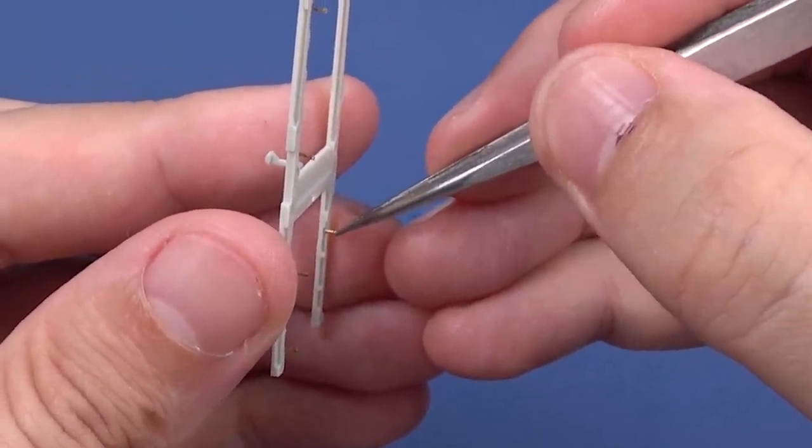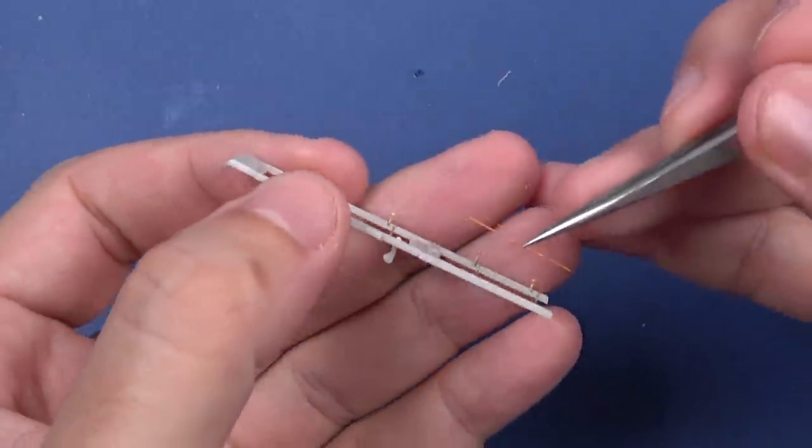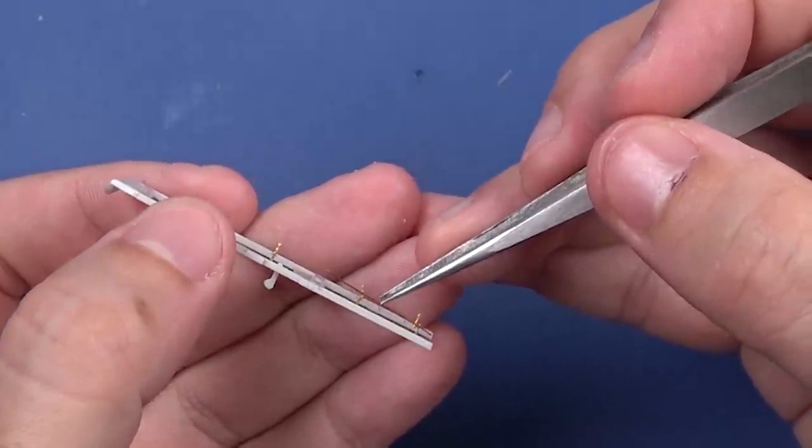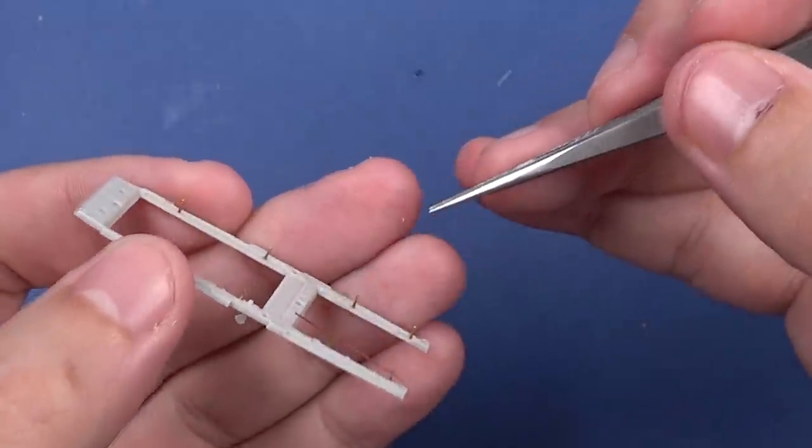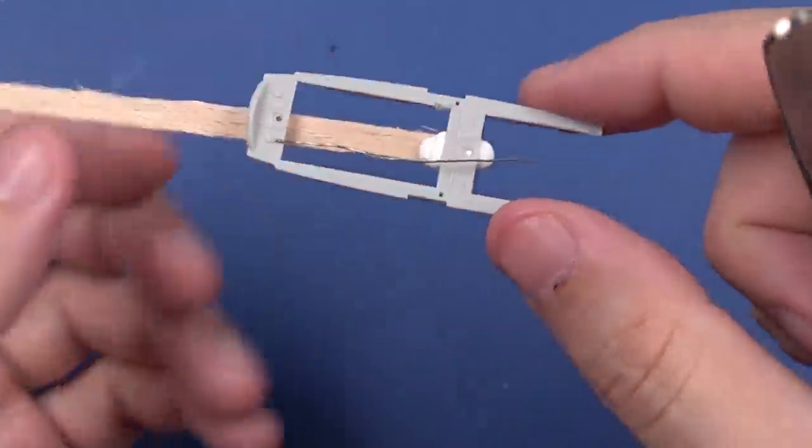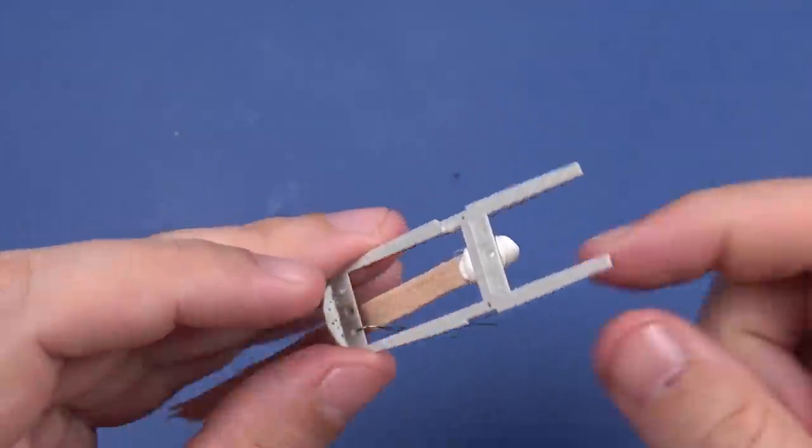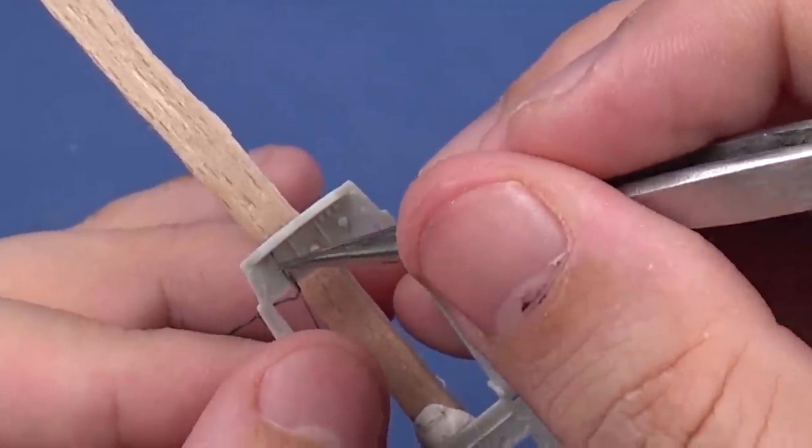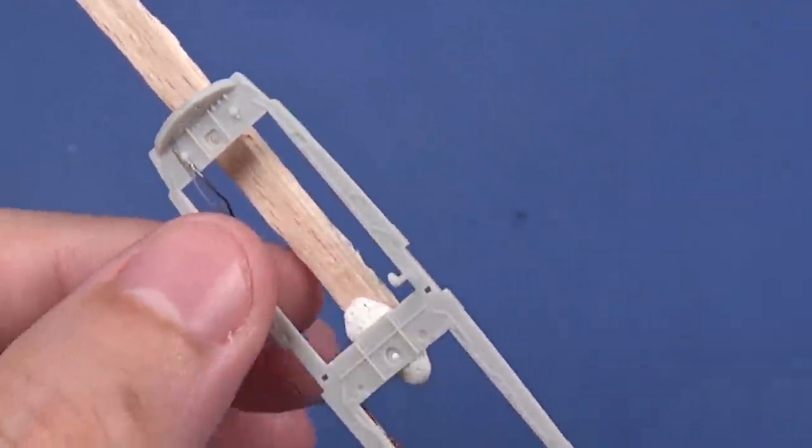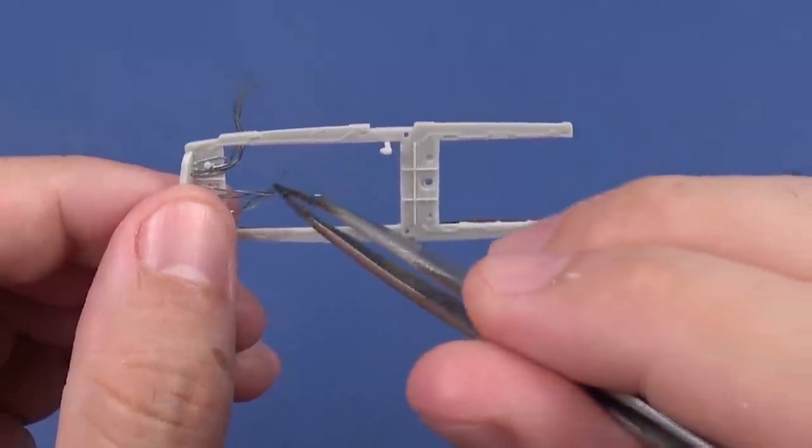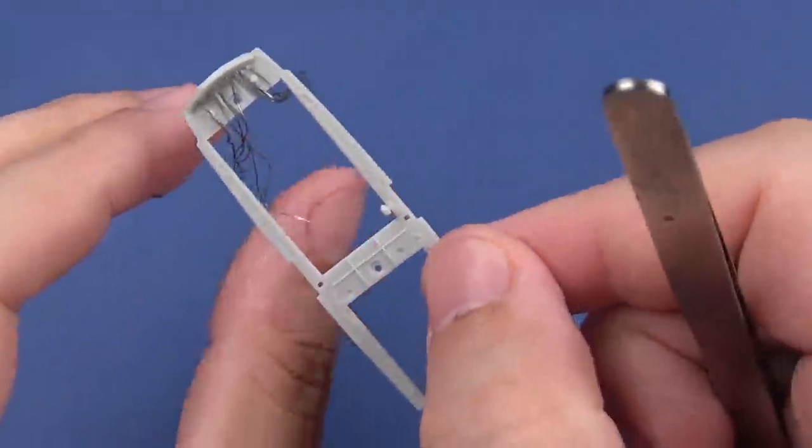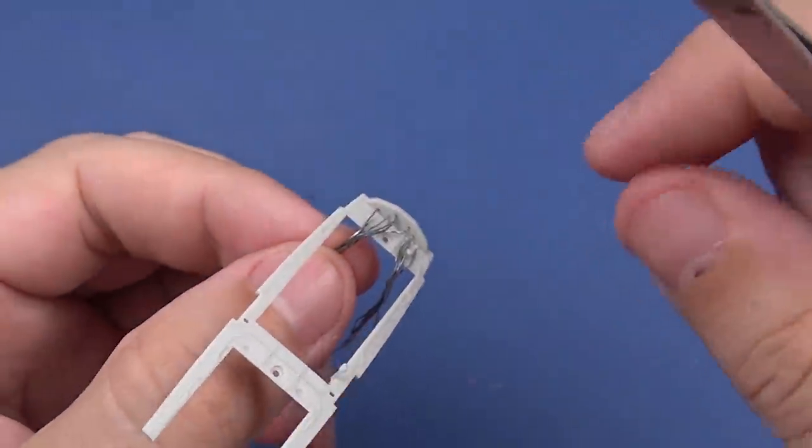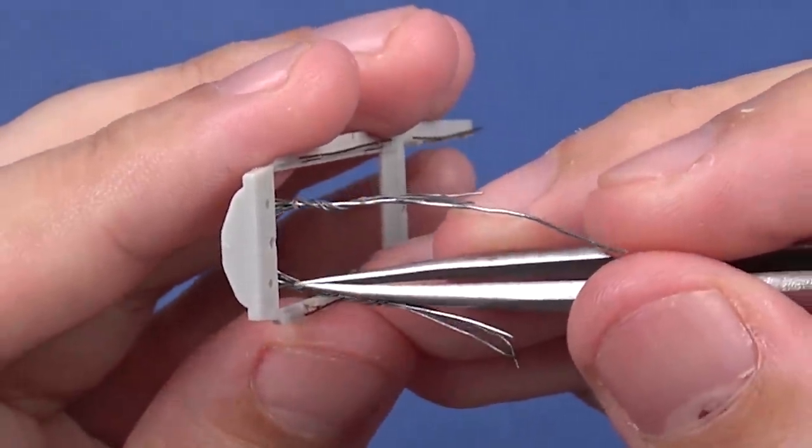These details I added may not look very neat and scaled right now. But when the cockpit is completed, they will add richness to the model as a complementary detail. Let's continue wiring. Clamping the wires with a strip I cut from self-adhesive foil.